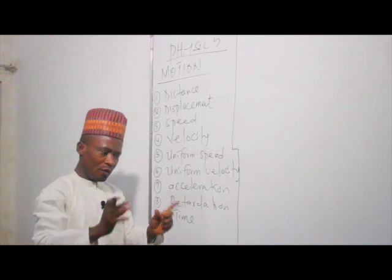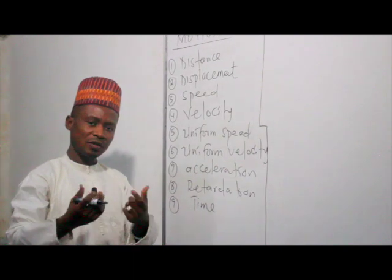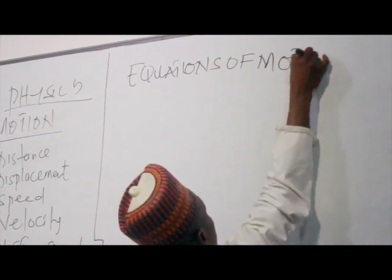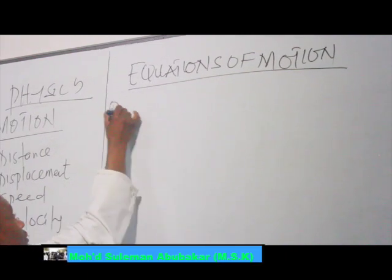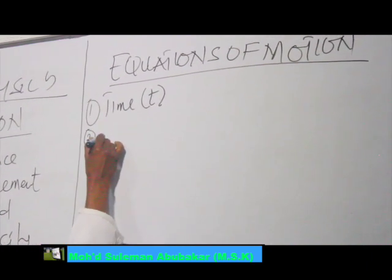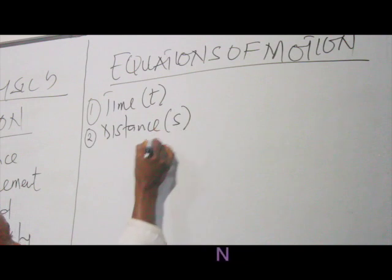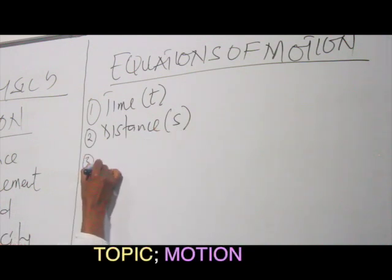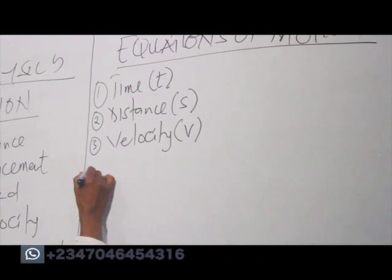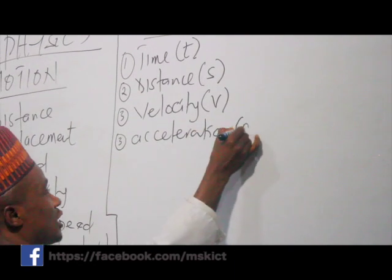There are symbols from these parameters that we need to use to derive the essential equations of motion. One: time, represented by small letter t. Two: distance, small letter s. Three: velocity, v or u. Four: acceleration, small letter a.